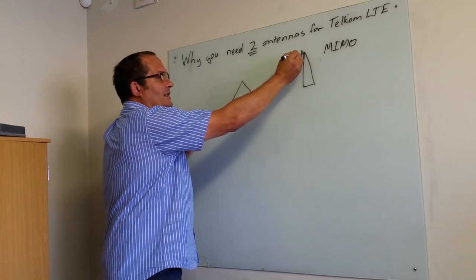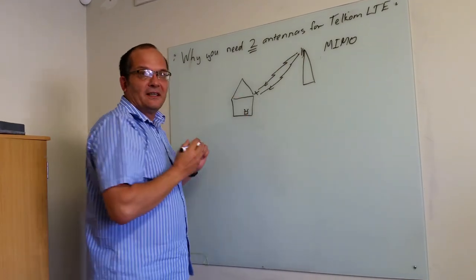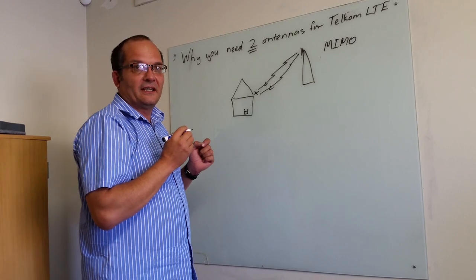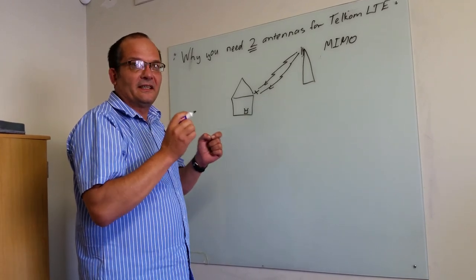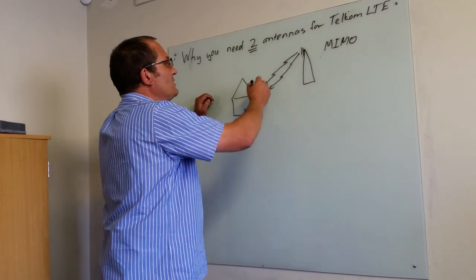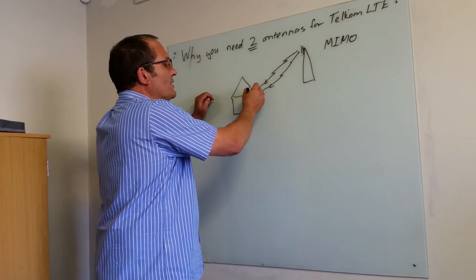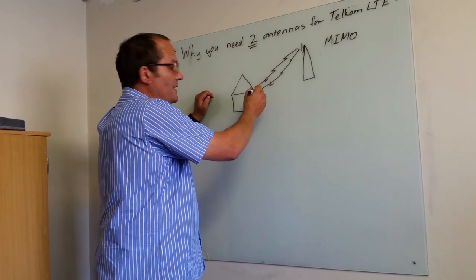What it means is that the cell phone tower sends you two sets of data streams so it can double your speed at which you can access anything and this is why they can get these fantastic speeds. It sends two sets of data and if you've only got one antenna then you can only receive the one set of data.